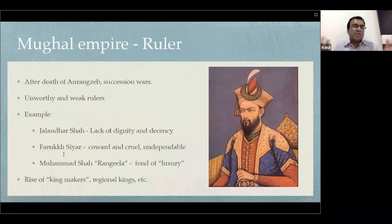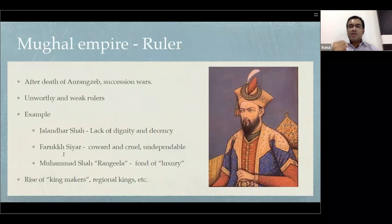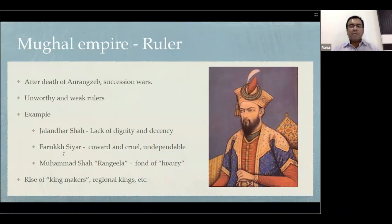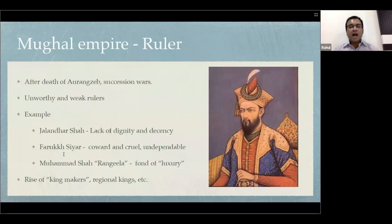Similarly, during Muhammad Shah Rangila's reign, Delhi was attacked by Nadir Shah, but Muhammad Shah was so fond of luxury that he was simply not there — not able to rise to the occasion and take charge. Therefore, because Aurangzeb was succeeded by all these weak and unworthy rulers, this became a major drawback and contributed to the decline of the Mughal Empire. It also led to the rise of regional kings and king makers.